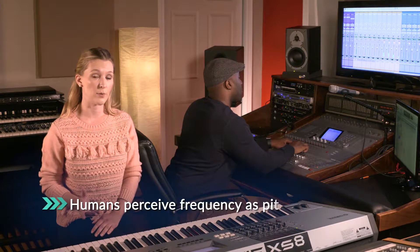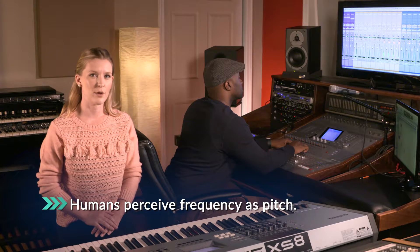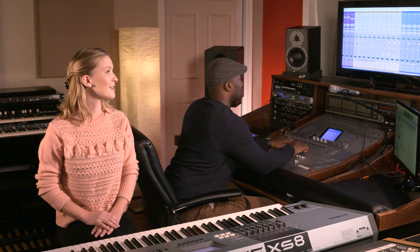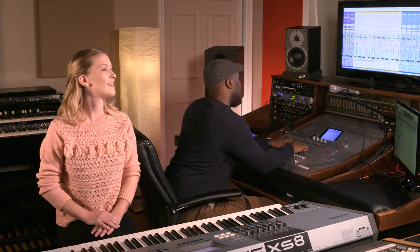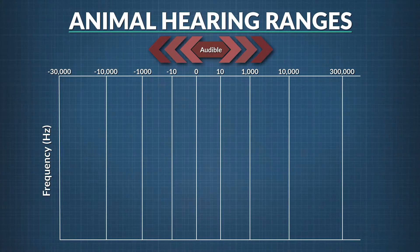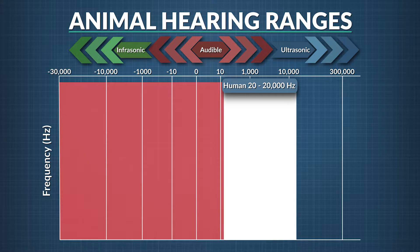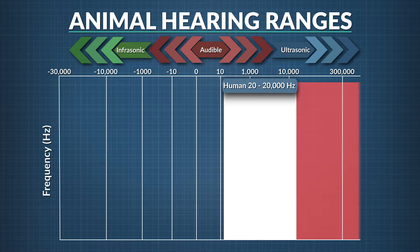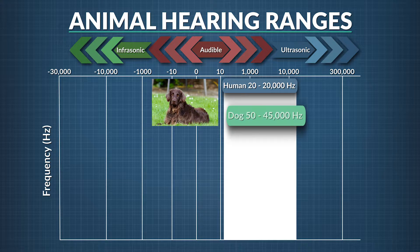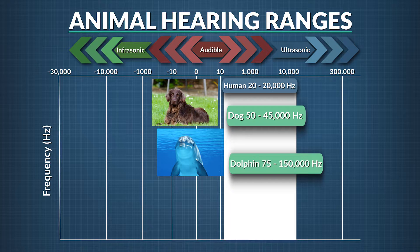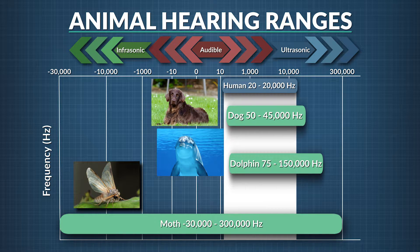Frequency is the number of wavelengths that pass by a given point every second, and we humans perceive frequency as pitch. Humans can hear frequencies roughly between 20 hertz and 20,000 hertz. Sounds with a lower frequency than humans can hear are called infrasonic, and those higher than what we can hear are called ultrasonic. The animal with the best hearing is actually the moth — it can hear 150 times more frequencies than we can.